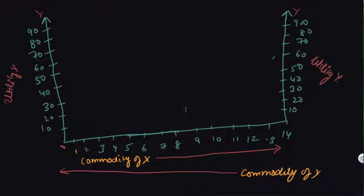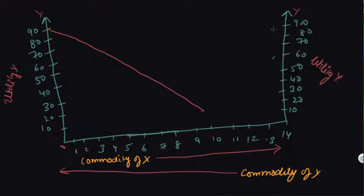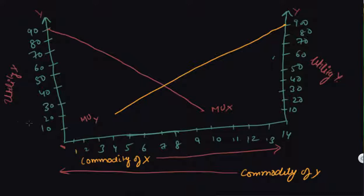Let's see this graphically. We are plotting commodity X and commodity Y on the same graph — from one end going to commodity X, and from the other coming back to commodity Y. As we have seen in previous lectures, the marginal utility graph is downward sloping: when you increase consumption, marginal utility falls. So the MU curve of X slopes down from left, and the MU curve of Y slopes down from right. The marginal utility of money (MU_M) is constant — shown as a horizontal line.